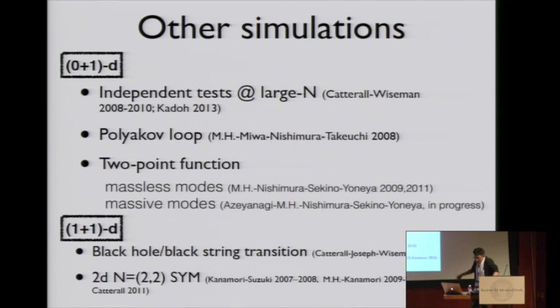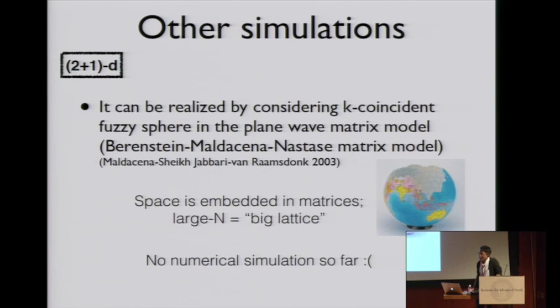Also other theory can be studied. We can say something quantitative about quantum gravity. In 2 plus 1 dimension, lattice regularization doesn't work. We have to use fuzzy sphere formulation. Maldacena, Sheikh-Jabbari, and Van Raamsdonk gave a nice regularization procedure for this case.